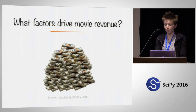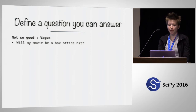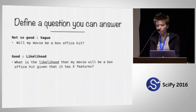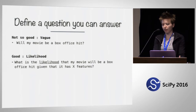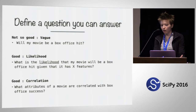Can we actually answer that question? What we really want to know is: is this movie I want to invest in going to be a big hit? Am I going to make a ton of money? But we're data scientists, not fortune tellers, so we can't really answer that question. We might be able to reframe it into something we can answer — for example, what is the likelihood that my movie will be a box office hit given certain features? Or, what attributes of a movie are correlated with box office success? That's more the question we'll be trying to answer.